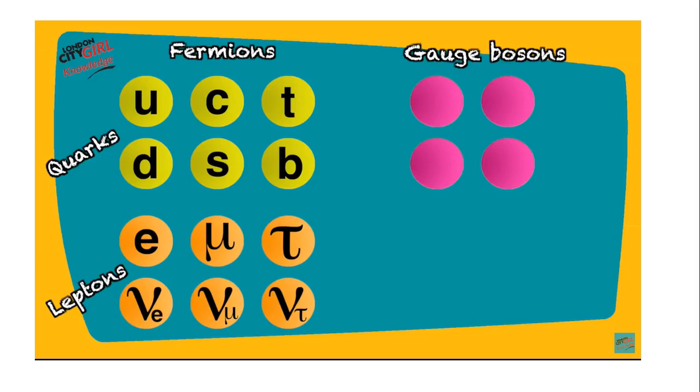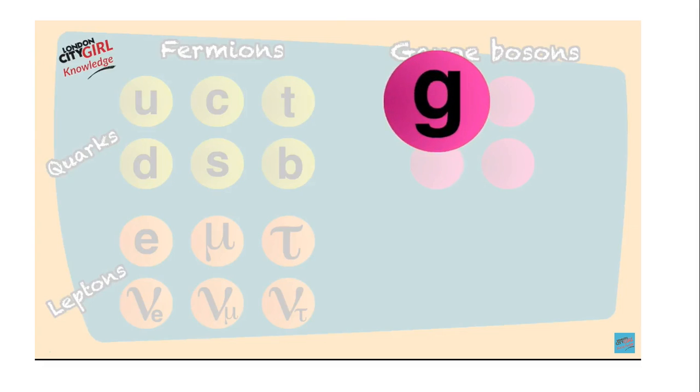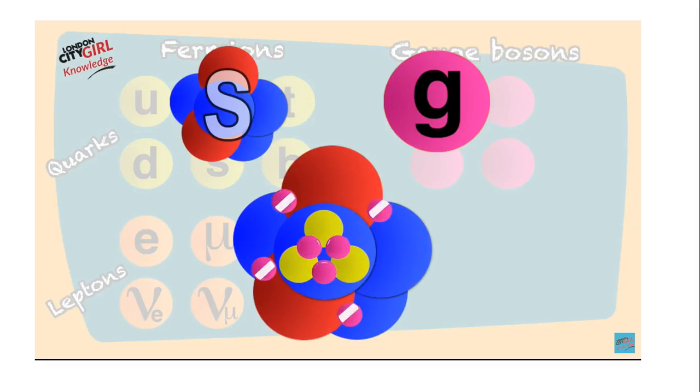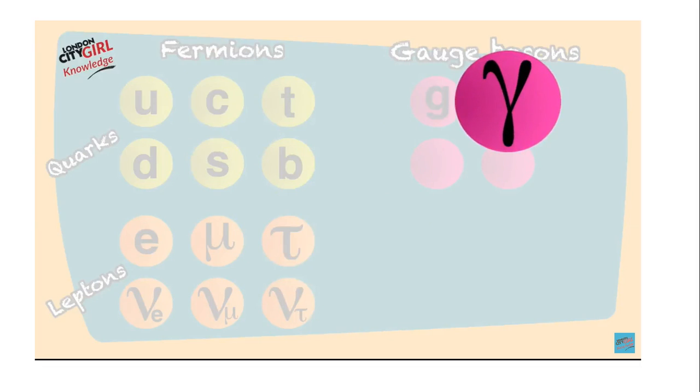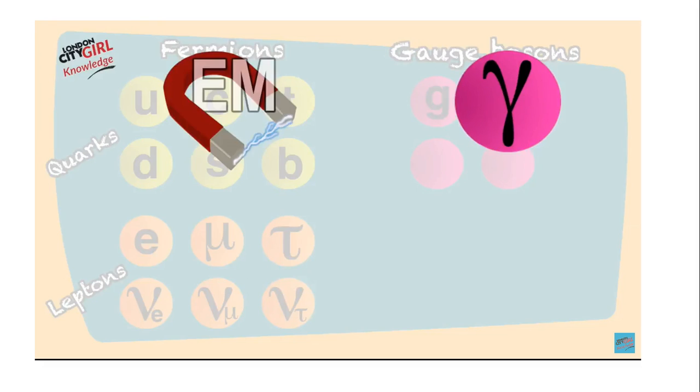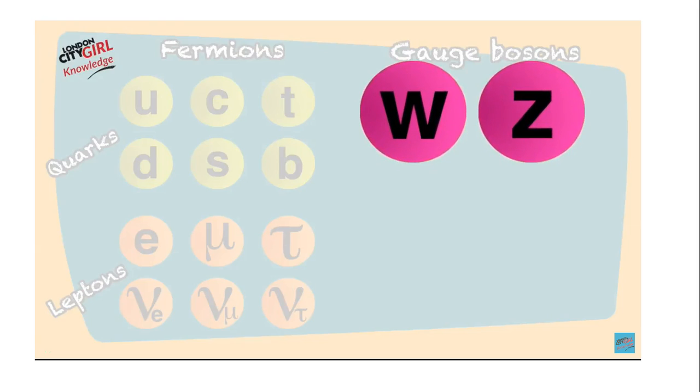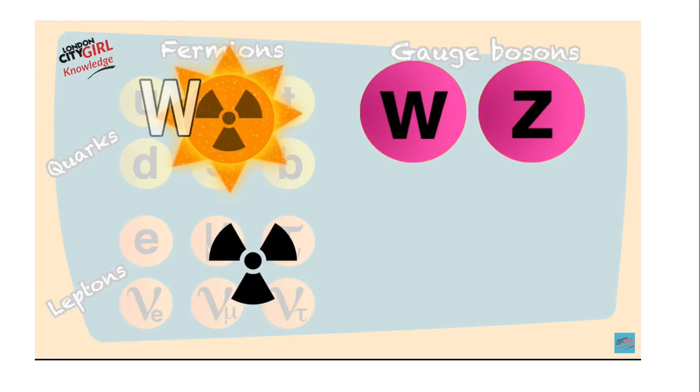Fermions create matter and the gauge bosons carry the forces between the matter particles. Gluons mediate the strong force between the quarks, holding them together within the protons and neutrons. Gluons also mediate the strong force between the protons and neutrons, holding them together within the nucleus of the atom.